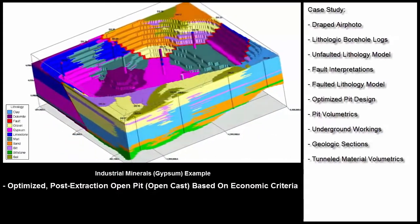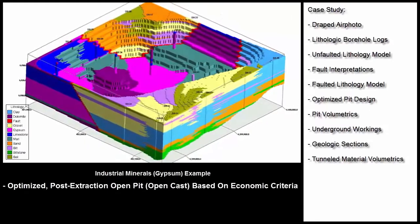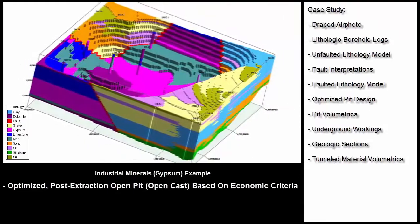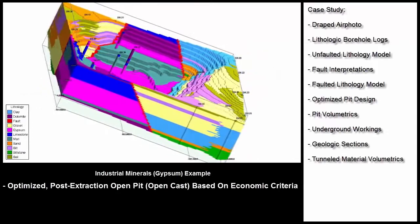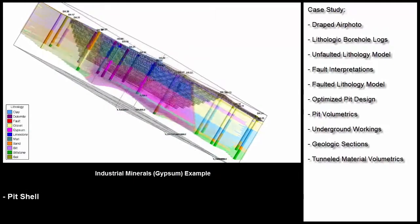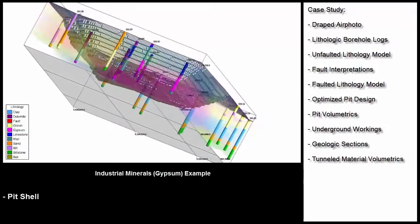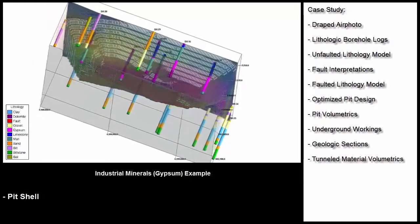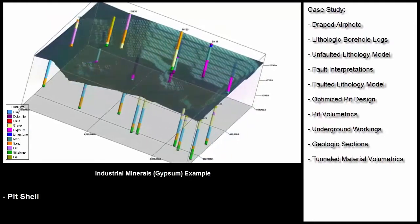In this industrial minerals example, we're showing how downhole rock type data can be used to create an optimal pit design. We started by entering and displaying the borehole data, just to make sure everything is in the right place, relative to a geo-rectified air photo.